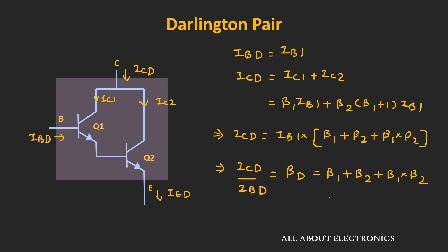So this is the current gain, or the value of β, for the Darlington pair. Usually, the product of β1 and β2 is very high compared to β1 and β2 individually, so approximately we can say that βd is approximately equal to β1 times β2. For example, if β1 is 100 and β2 is 200, then β1 times β2 will be equal to 20,000. If we see the total value of βd it will be equal to 20,300, so approximately we can say βd equals 20,000. That is why the current gain of this Darlington pair is usually expressed as β1 times β2.